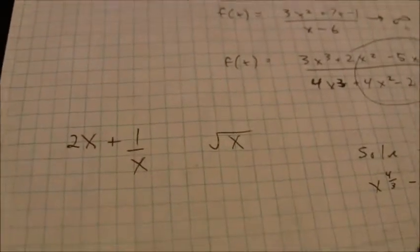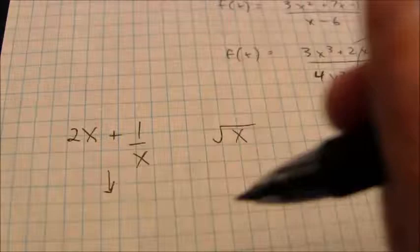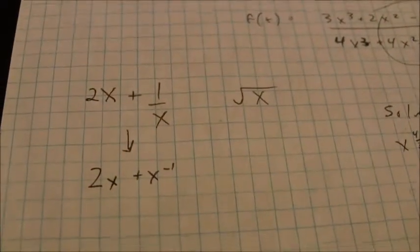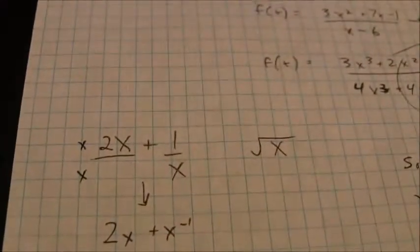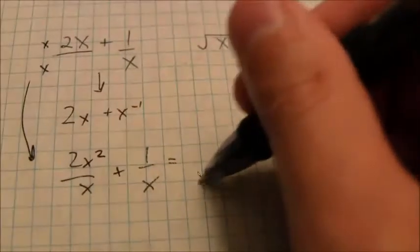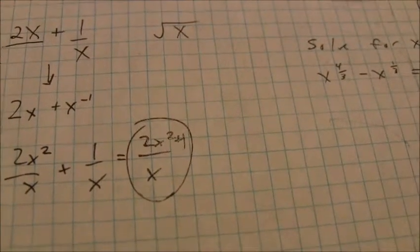A few reminders: if you have a function written in a mixed form and need to take the derivative, you can rewrite it using a negative exponent, which makes it easy to work with. You can also write it as a fully rational function with a common denominator. Multiply the top and bottom by x (assuming x ≠ 0), and you end up with (2x² + 1) over x. When adding fractions, numerators get added and the denominator stays the same.